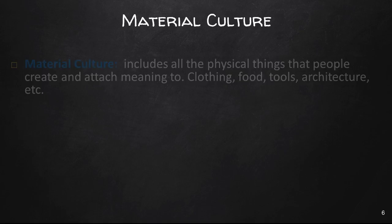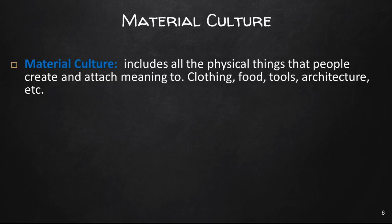Up to this point, we have been thinking of culture primarily from a non-material cultural perspective — that is to say, the ideas, beliefs, habits, and values of people. Material culture includes all physical things that people create and attach meaning to: clothing, food, tools, architecture, and so forth. Natural objects and materials like rock, dirt, and trees are also considered to be part of material culture, though what matters is how people view and use those natural objects.